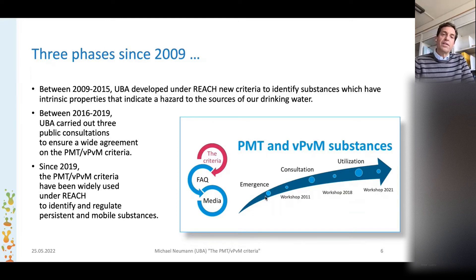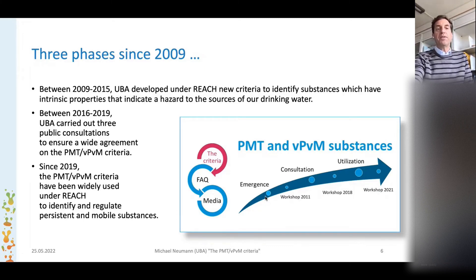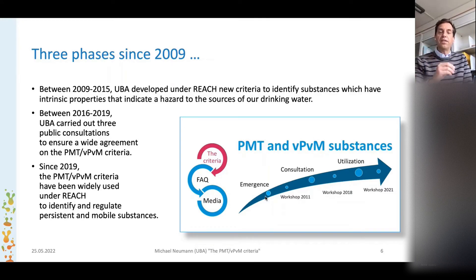It all started in 2009 and ran until 2015, where UBA developed under REACH new criteria to identify substances which have intrinsic substance properties that indicate a hazard to the sources of our drinking water. Then we had a second phase where UBA carried out three public consultations to ensure wide agreement on the PMT/vPvM criteria. And since 2019 we are in the third phase where the criteria have been widely used under REACH to identify and regulate persistent mobile substances. As you can see in the figure on the right side, this process is nicely accompanied by three workshops held here at UBA.